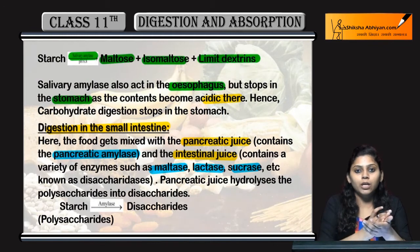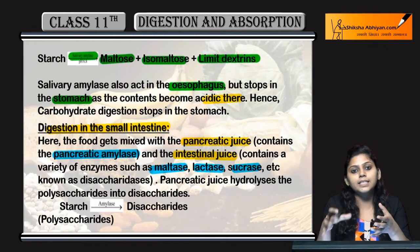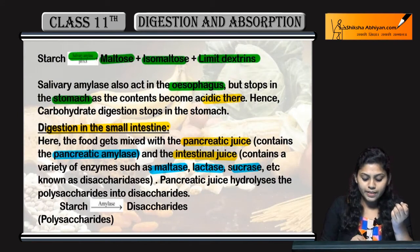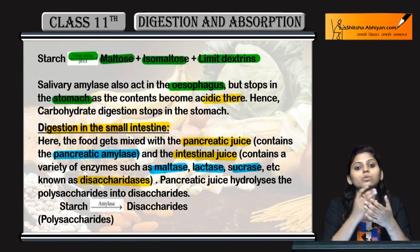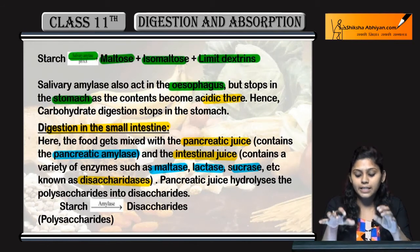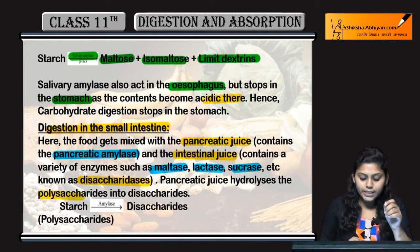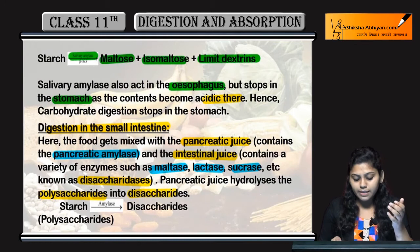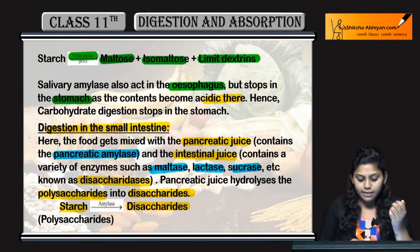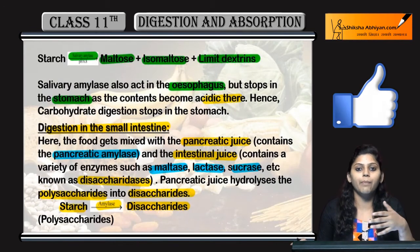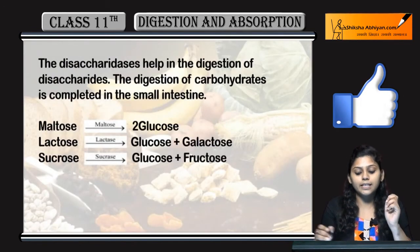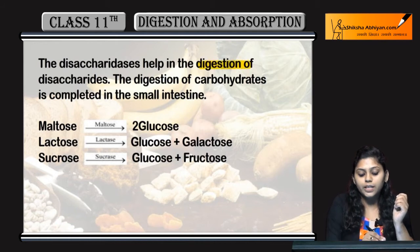Maltase breaks down maltose, lactase breaks down lactose, and sucrase breaks down sucrose. These enzymes convert disaccharides into monosaccharides. Pancreatic amylase converts polysaccharides into disaccharides — for example, starch is converted into disaccharides in the presence of pancreatic amylase.